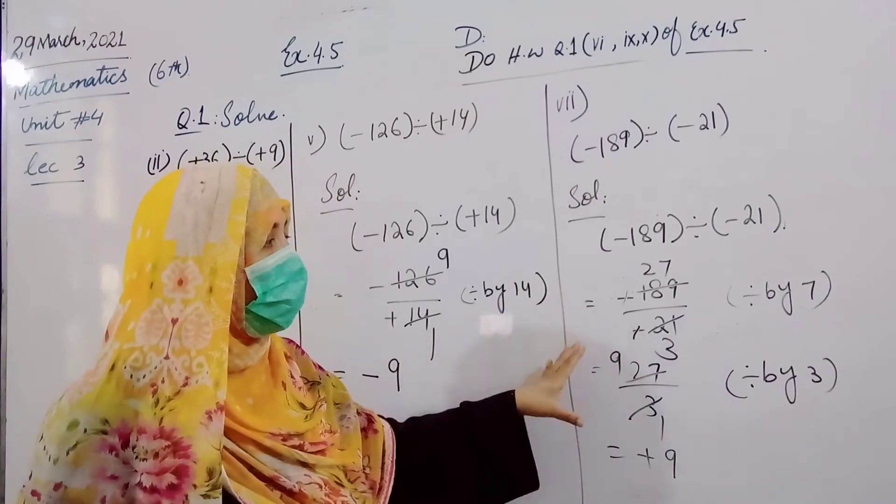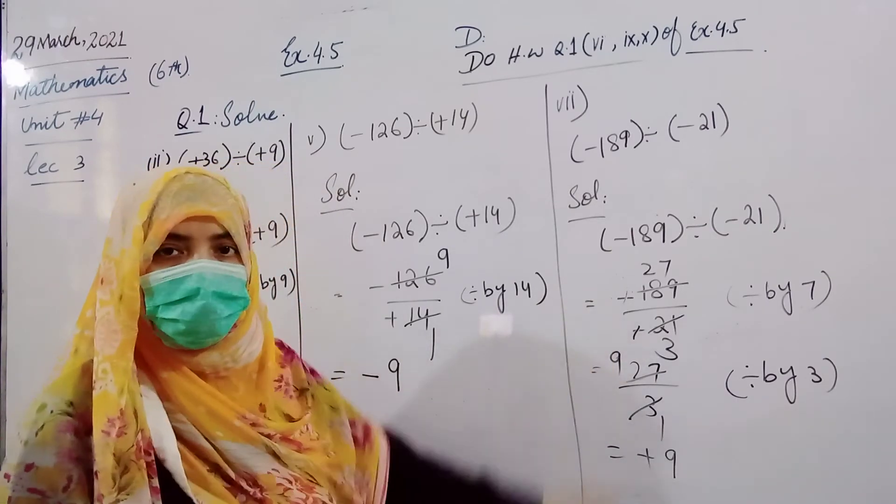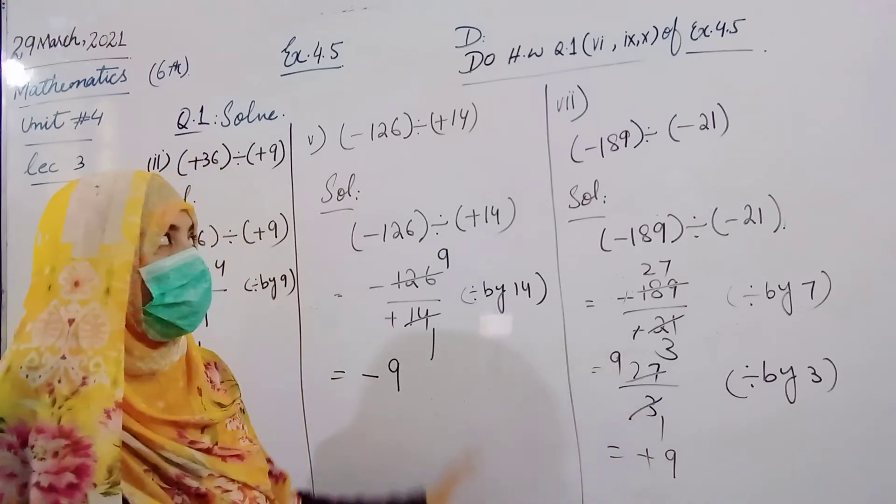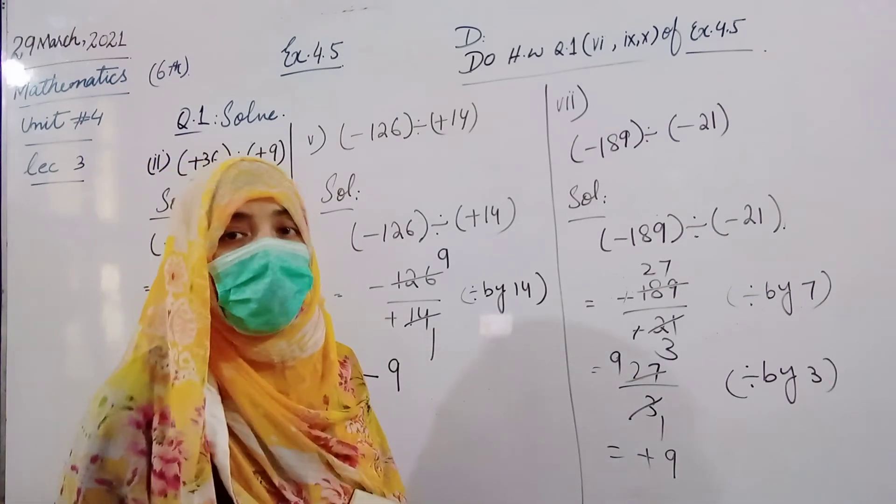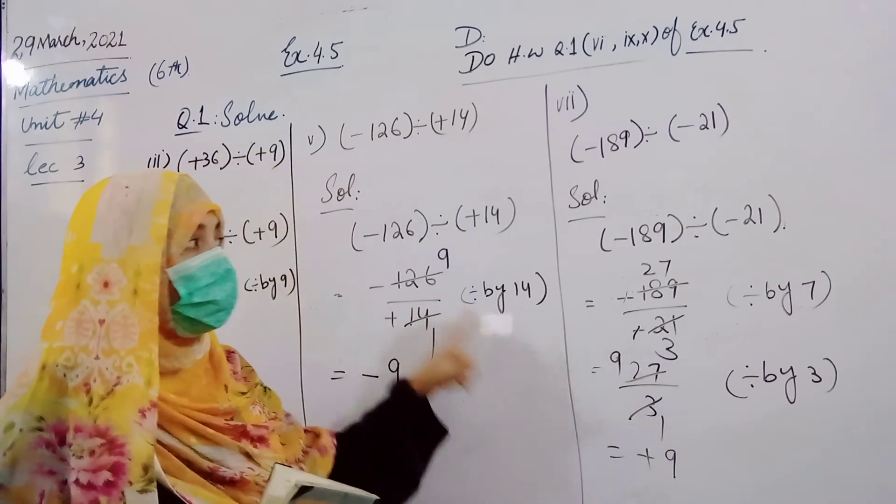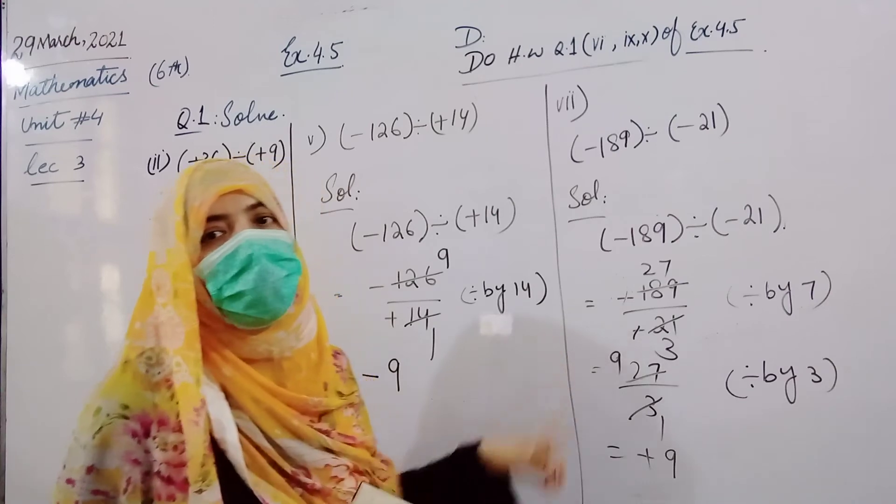You also know that division is repeated subtraction, so we have to multiply to check the answer. This is the whole procedure. But here we have divided it, okay?